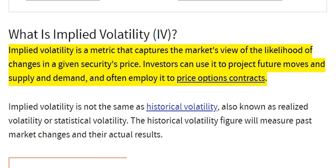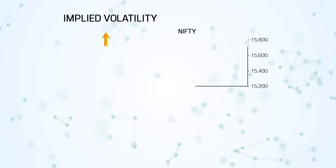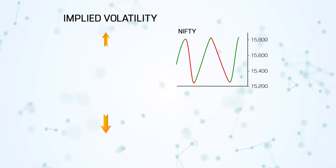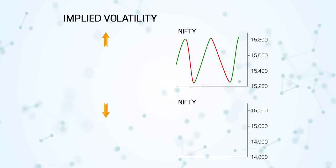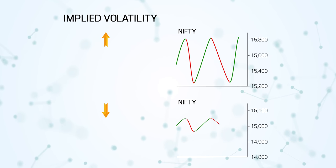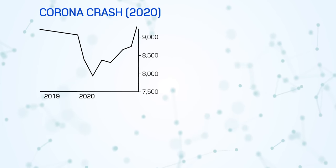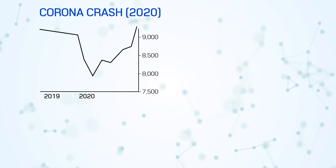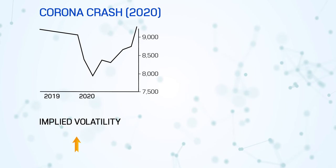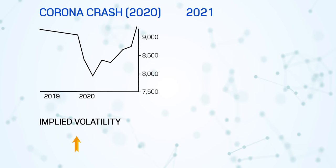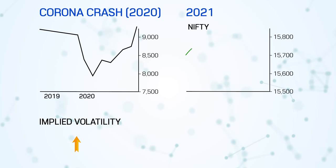In simple terms, Implied Volatility tells you how volatile the stock can be in the near future, maybe for a period of the next one month. Higher the implied volatility, the underlying is likely to make a bigger move. Lower the implied volatility, the probability of the underlying making a big move is very less. If you see the period of coronavirus last year, the implied volatility would have been much higher. Now it is more or less a stable market, so the implied volatility will be less.